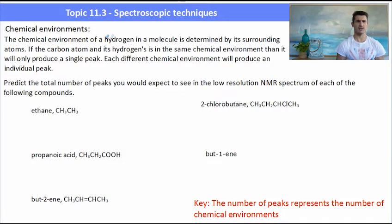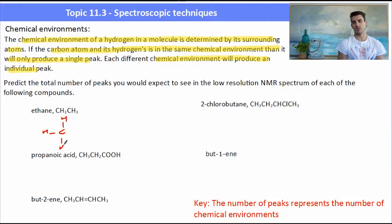One of the key things we need to be able to do is determine the number of chemical environments in a molecule. Every time there is a different environment we will produce an individual peak. So here's a number of different types of molecules and we need to determine how many peaks we would see in the NMR. The easiest way is to draw these out, which is why we practice some organic chemistry, and then determine how many chemical environments. For ethane we have two CH3 groups and they're both connected to each other. So the NMR would see that as one, one chemical environment.